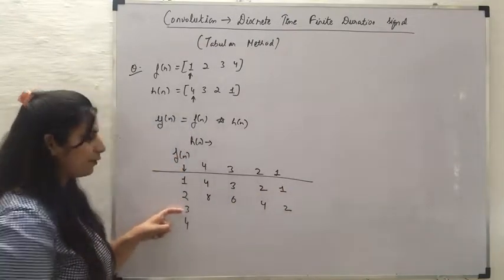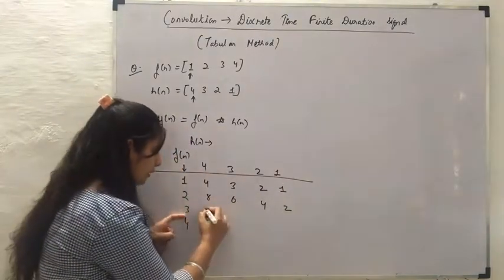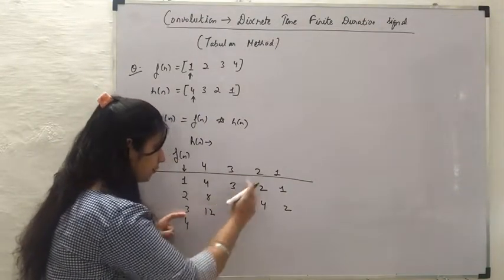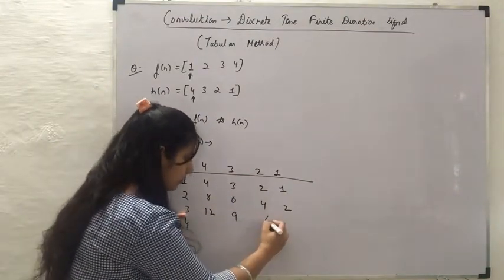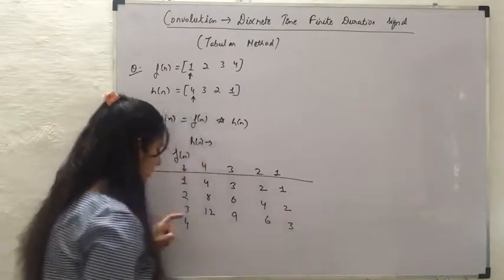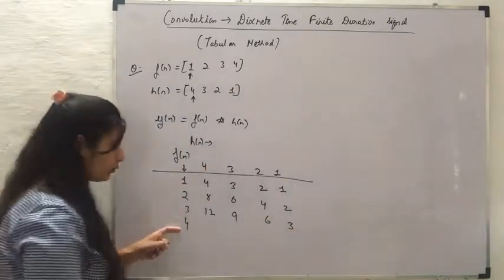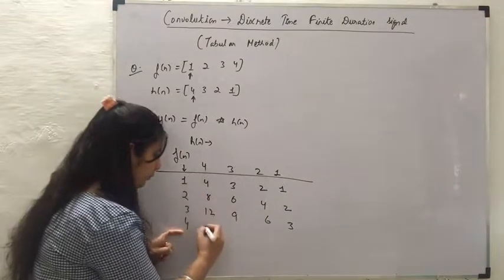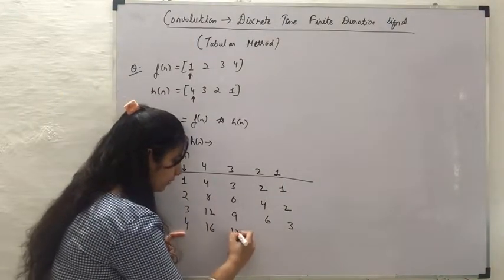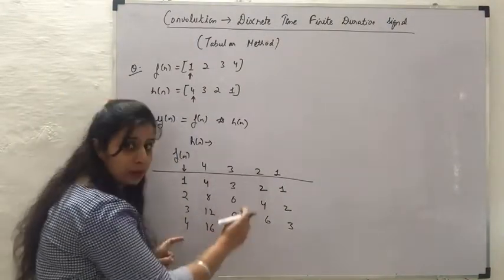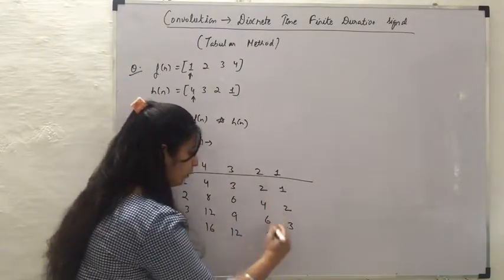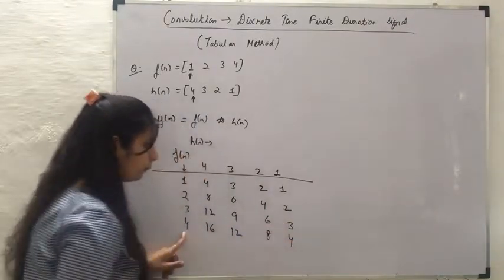Next, 3 multiplied with 4 is 12; 3 multiplied with 3 is 9; 3 multiplied with 2 is 6; and 3 multiplied with 1 is 3. Then for 4: 4 multiplied with 4 is 16; 4 multiplied with 3 is 12; 4 multiplied with 2 is 8; and 4 multiplied with 1 is 4.